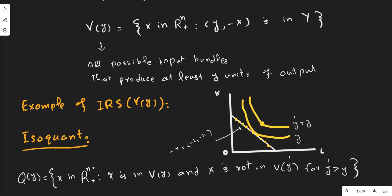Let's extract the input requirement set from this diagram. Here n equals 2, because it has a two-dimensional space — a vertical dimension and a horizontal dimension. The input vector x is in the two-dimensional real space with positive dimensions, such that x is in the input requirement set V(y) — meaning x can produce output y using this level of labor and capital. And x is not in any other input requirement set V(y') beyond the producer's reach.